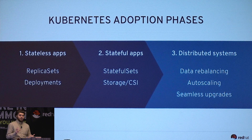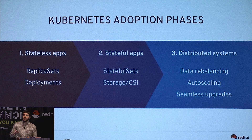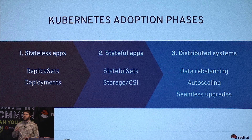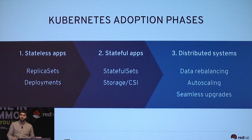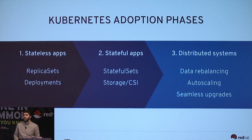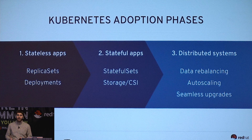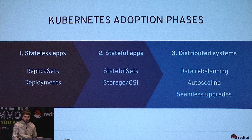But what you don't get is full distributed systems. You have properties inside your applications that aren't modeled in just Kubernetes objects like a stable set. You want to do data rebalancing, auto-scaling, and seamless upgrades — you can't get there with just Kubernetes alone. All these things that need to happen inside your application require unique knowledge that must be captured somewhere.